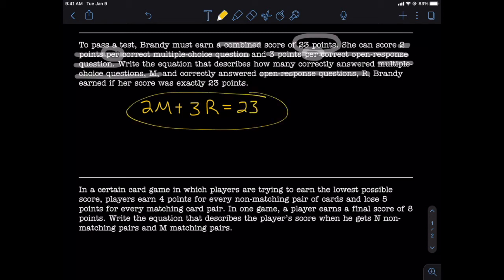So the final equation this time is 2M plus 3R equals 23. You see how easy that was? All we had to do was classify each number, make sure that the right numbers went with the right variables, and then the rest kind of just takes care of itself.